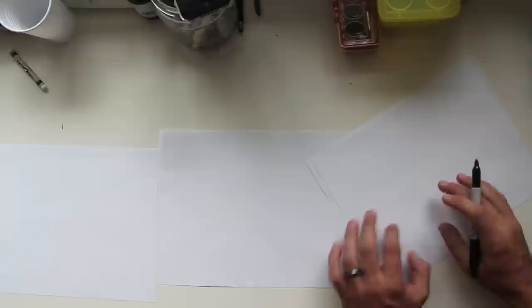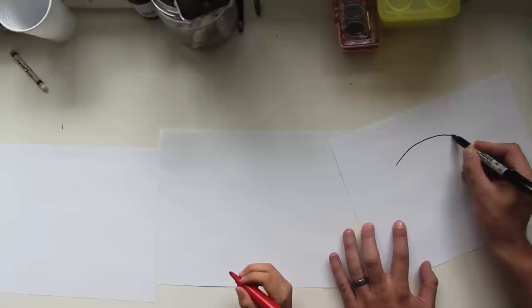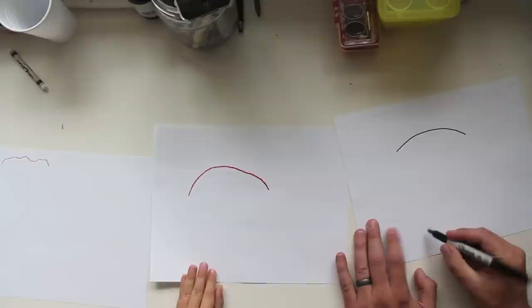All right, so should we start? Yeah. Okay, the first step you're going to do is make an upside-down U, but it looks like this. Okay? It's a thin, kind of a thin U. Good job, Hats.